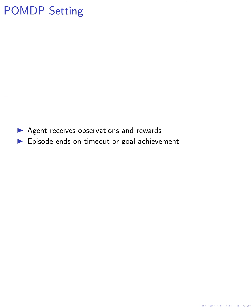We then use the reward model in a partially observed Markov decision process (POMDP) setting, where the agent receives observations, takes actions, observes the next state, and receives rewards. The episode terminates either on timeout or when the goal has been achieved according to the intrinsic VLM reward function.